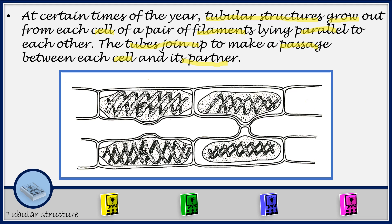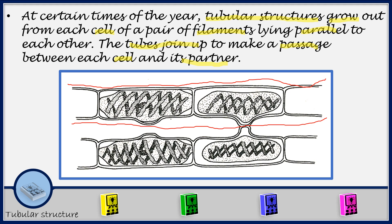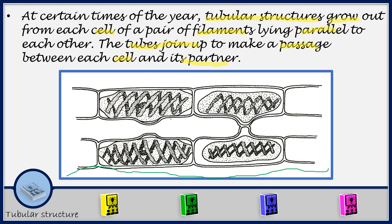We are looking at sexual reproduction in Spirogyra, and this type of reproduction is called conjugation. In sexual reproduction, tubular structures grow out of each cell. First of all, we have filaments — this filament here is a Spirogyra, and this filament here is also a Spirogyra, lying parallel to each other.